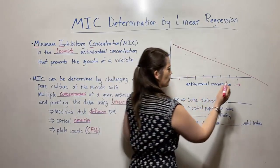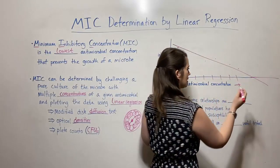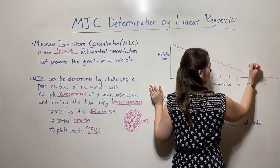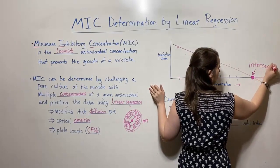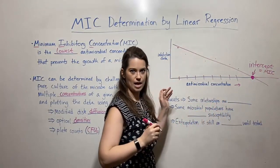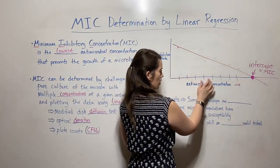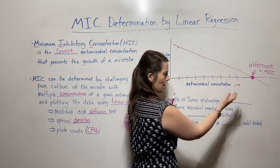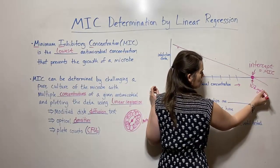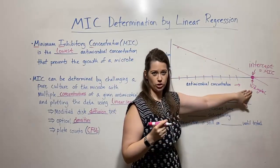Wherever that trend line hits the x-axis — you may need to extend the x-axis a bit — that x-intercept is the estimated MIC, the estimated minimum inhibitory concentration. So let's say you tested 10, 20, 30, 40, 50, 60, 70, 80 micrograms per mil, and that x-intercept falls at 102 micrograms per mil. Then you know you can go and test 102 micrograms per mil, and also some other numbers on either side — 100, 101, 103 micrograms per mil — to figure out which concentration actually inhibits 100% of the growth. That would be your MIC.